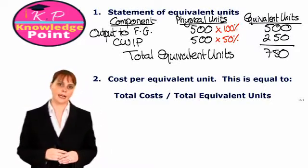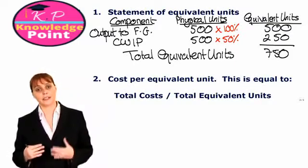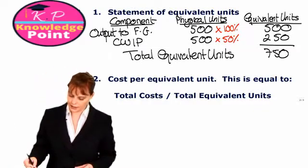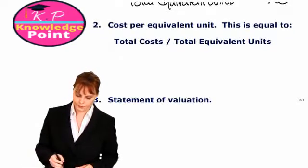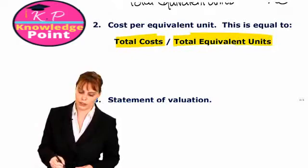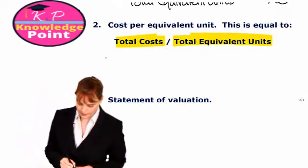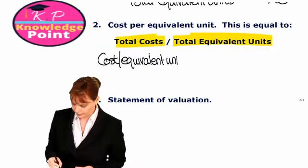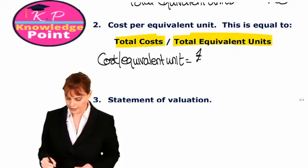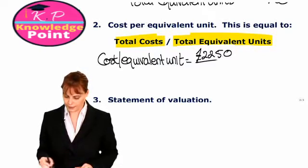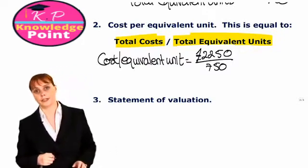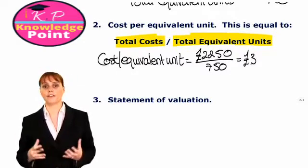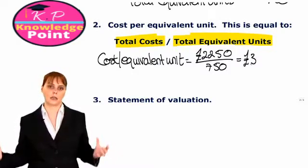Our next step is to calculate the cost per equivalent unit, which we will use to value each of our two components. All we do is divide the total costs by the total equivalent units. In this exercise, our cost per equivalent unit is 2250 divided by 750 equivalent units, which gives us 3 pounds. So each equivalent unit of work done in the period has cost the company 3 pounds.